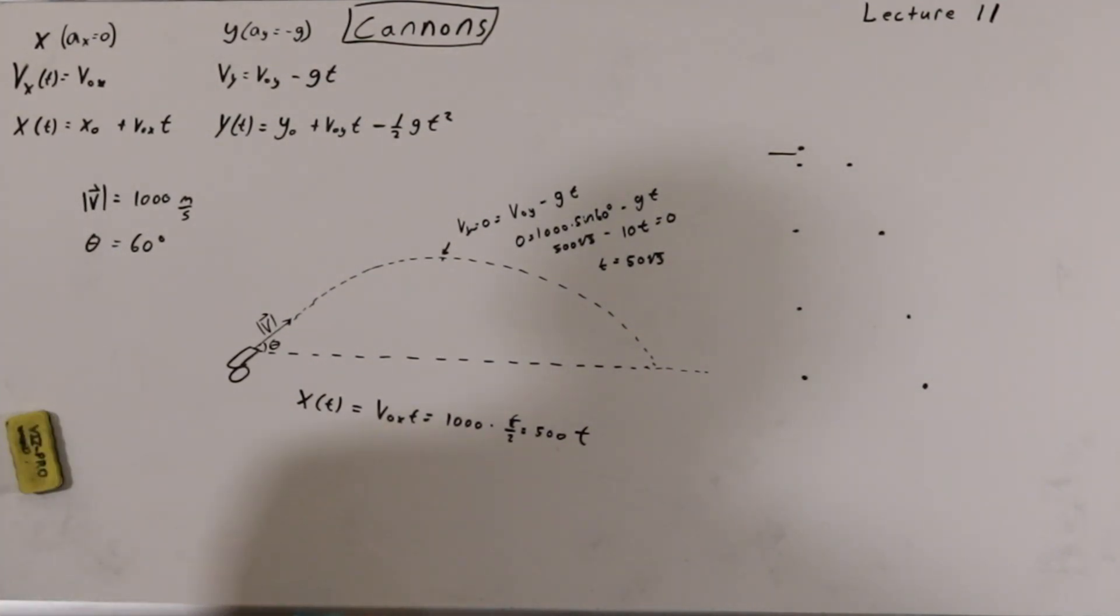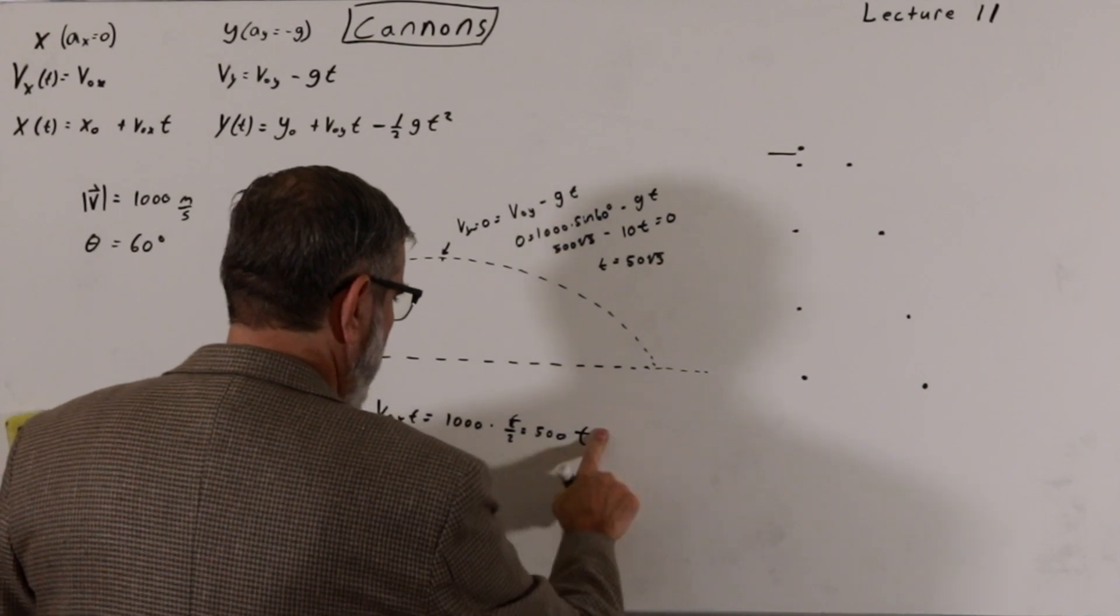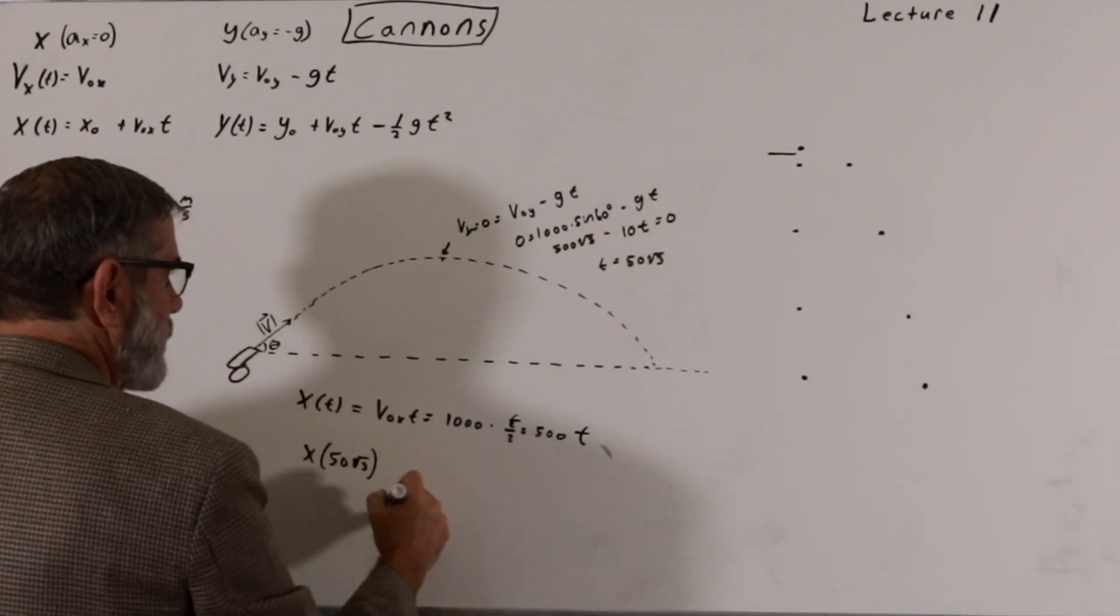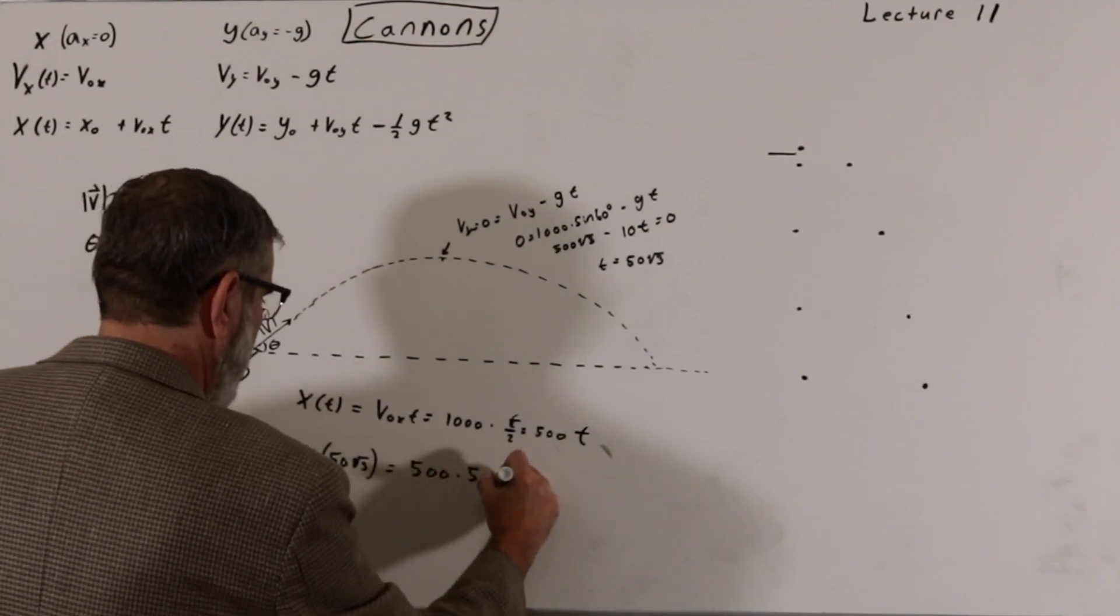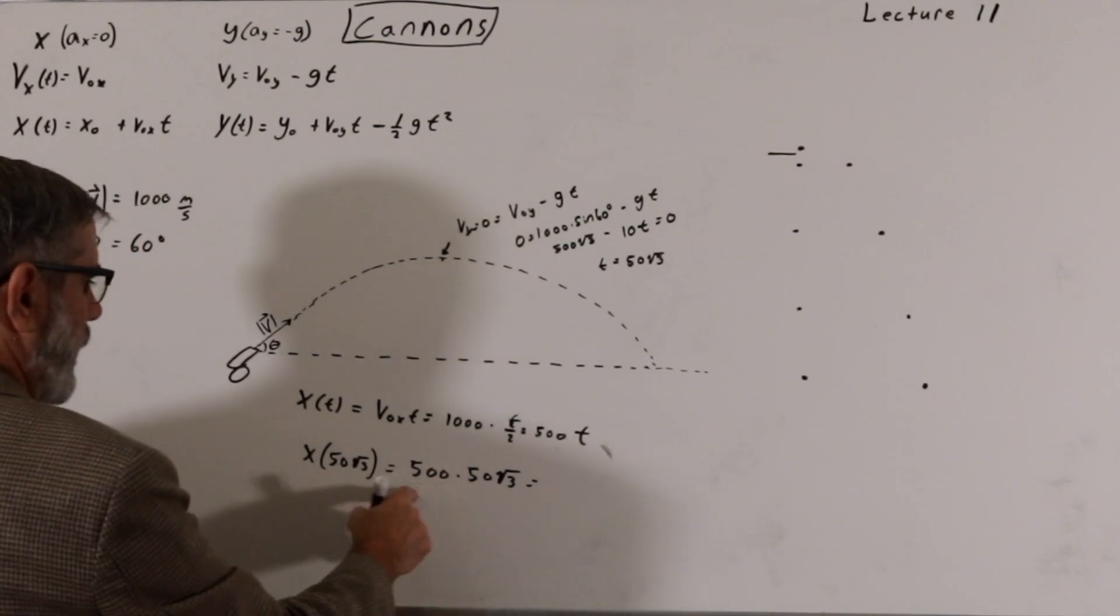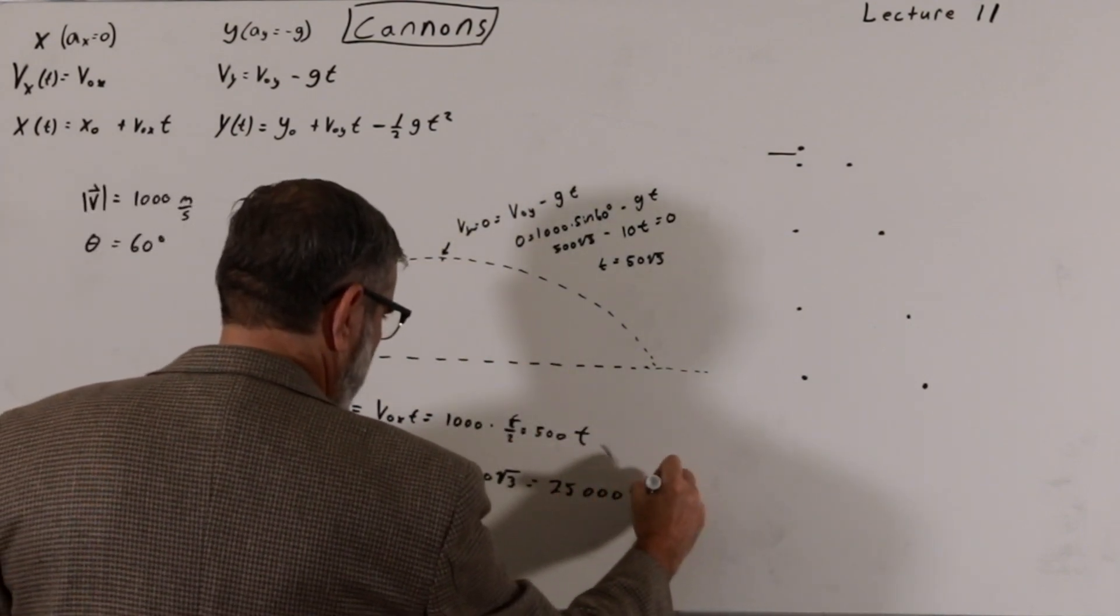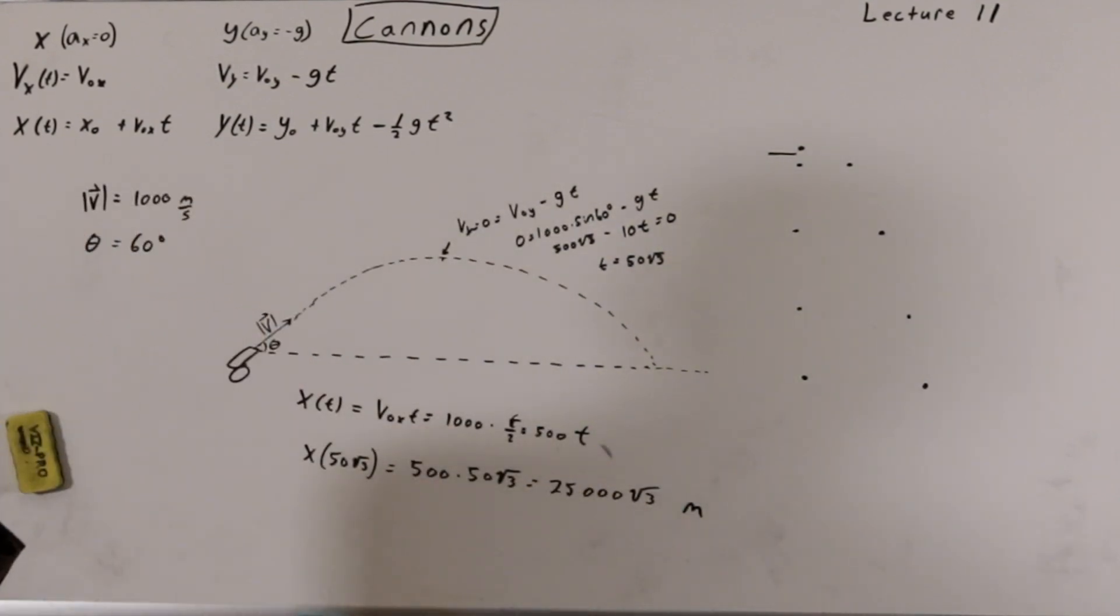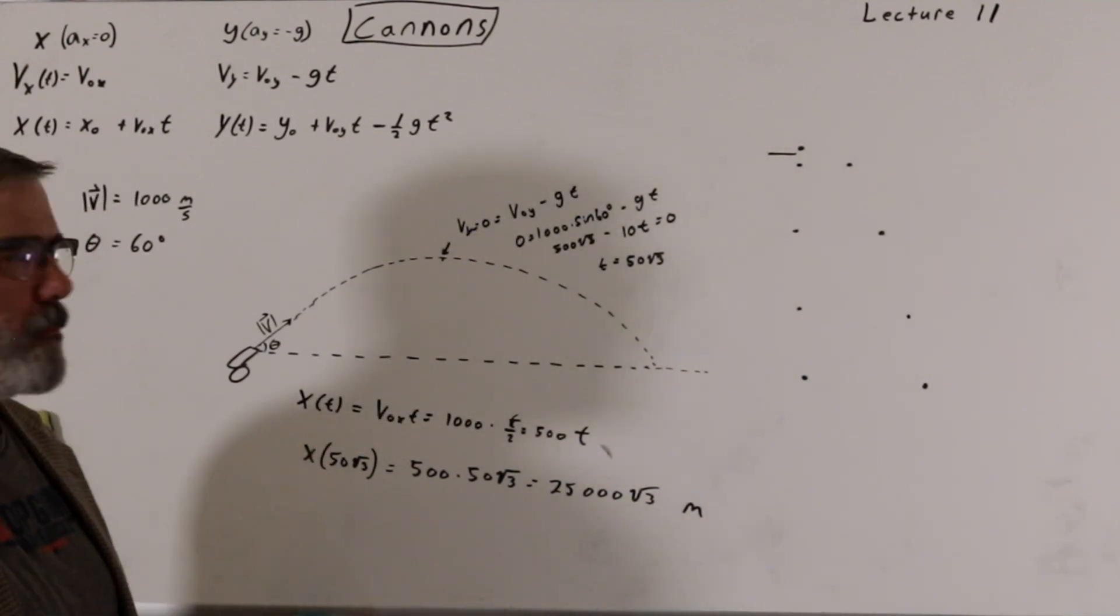Just a little algebra there. I can now substitute that back in here and get my displacement. I'll write like this. So x at the time 50 square root of 3 seconds is equal to 500 times 50 square root of 3. 5 times 5 is 25, so this should be 25,000 times the square root of 3. And the units, of course, will be meters. So that's about 25 kilometers. So somewhere around 50 kilometers.